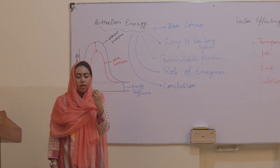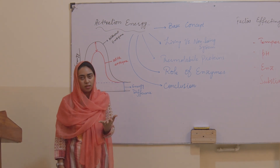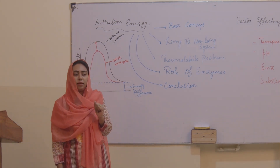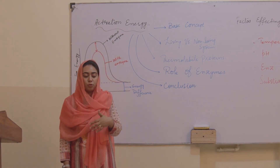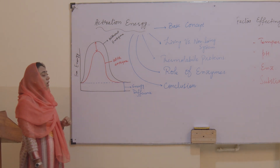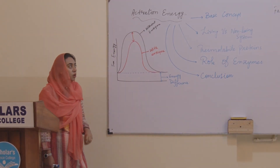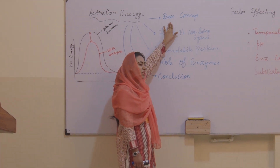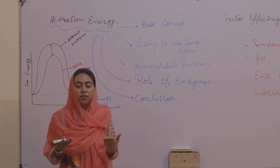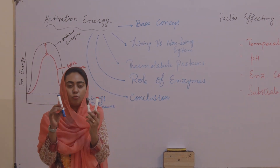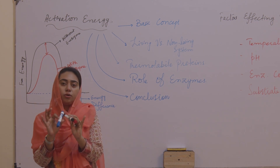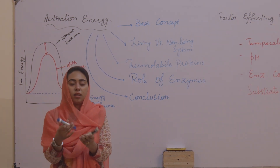Let's recall a bit. In the first lecture, when we listed the properties of enzymes, there was a point that enzymes reduce the activation energy. Enzymes are useful to reduce the activation energy — that is what they do. So, activation energy: the basic concept is that it is the amount of energy which is required to start up any reaction. Molecules basically do not react with one another. Say molecule A, molecule B, and molecule C — these three molecules are not going to react with one another.